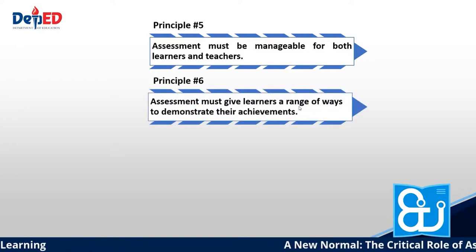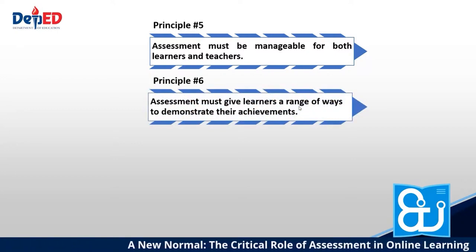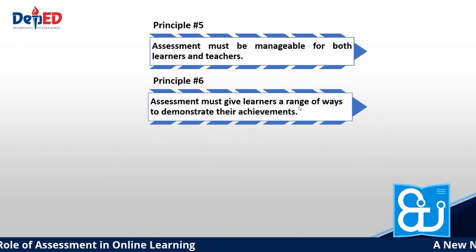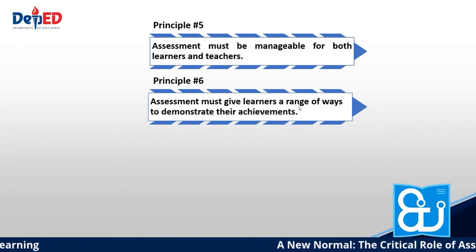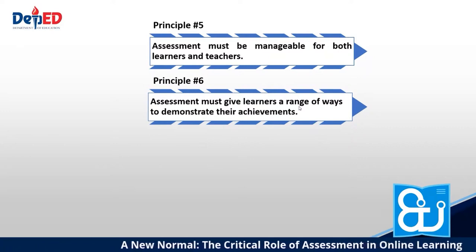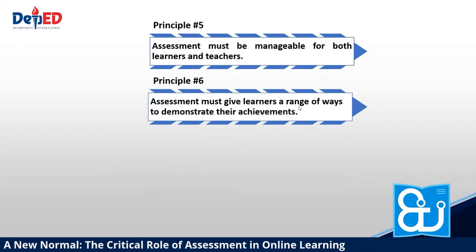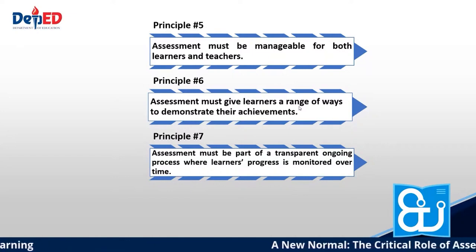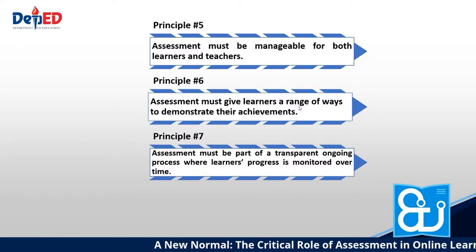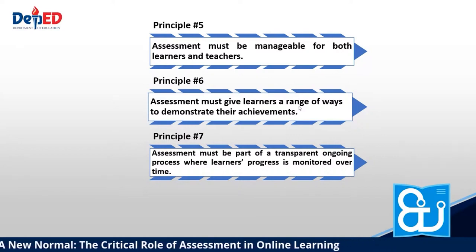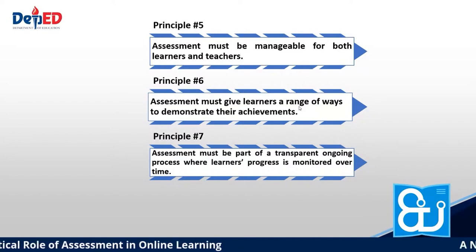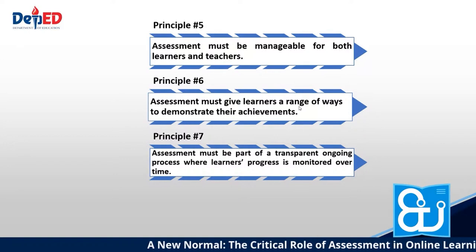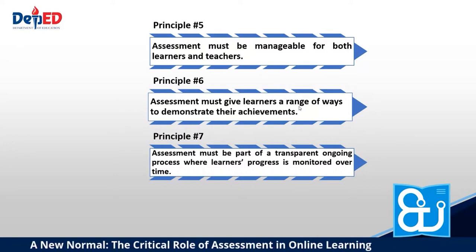For principle number six, assessment must give learners a range of ways to demonstrate their achievements. As teachers, we need to use a range of assessment methods and activities to give learners many opportunities to develop and demonstrate their learning on a specific topic. For number seven, assessment must be part of a transparent ongoing process where learners' progress is monitored over time. The teacher must use assessment criteria based on curriculum standards and competencies to gather evidence of learners' achievements, and these criteria should be clear to learners before they carry out the next activity.